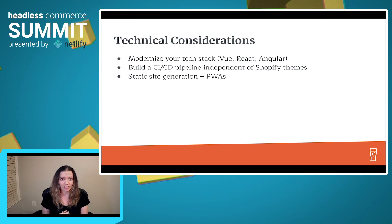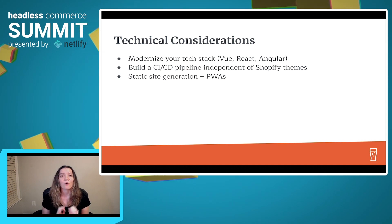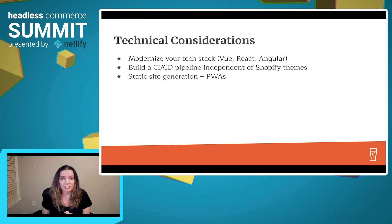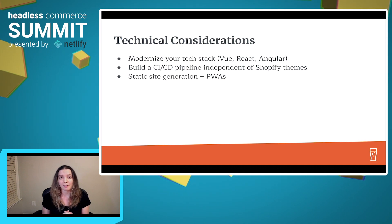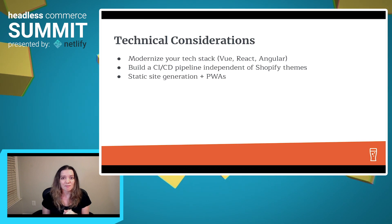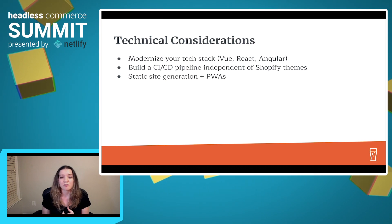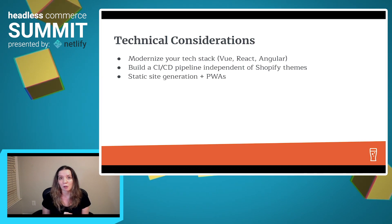Next, static site generation. With a headless storefront you can do static generation, which is so important for e-commerce because there's a proven inverse correlation between low latency and higher conversion rate. It's also built to scale — spikes in traffic due to flash sales or new product launches aren't an issue. And if you're interested in progressive web apps, you can go the PWA route. They're a clever and accessible way to provide online shoppers with a more fluid and flexible experience, especially on mobile devices.